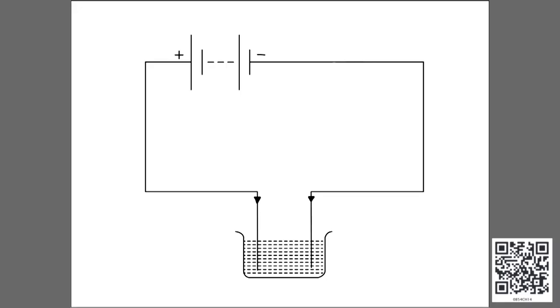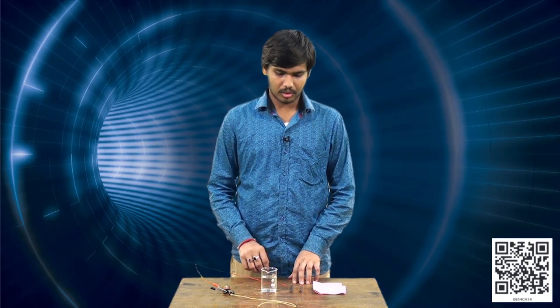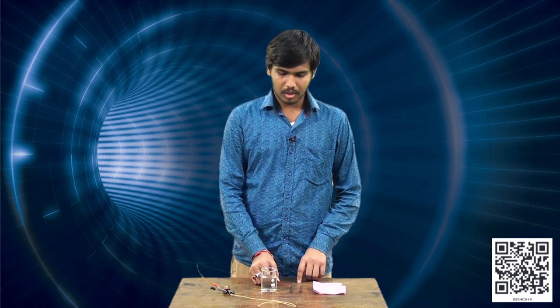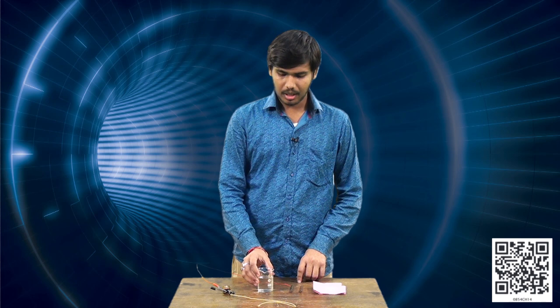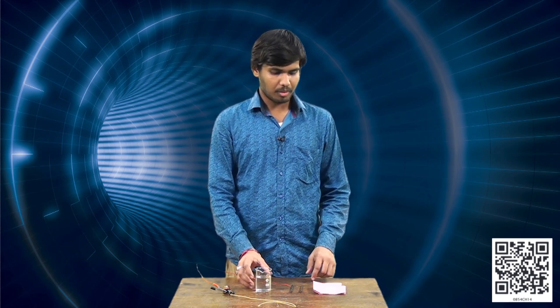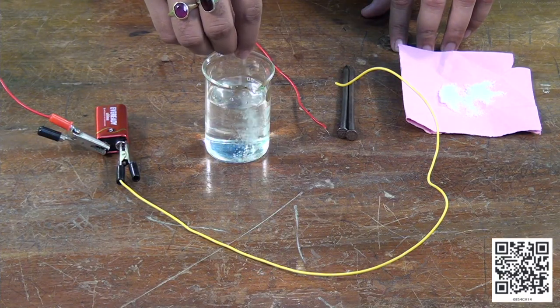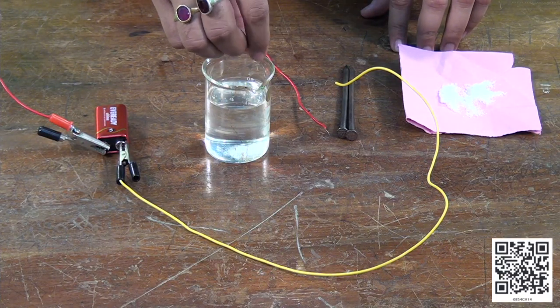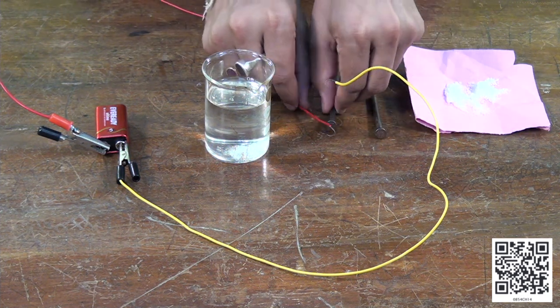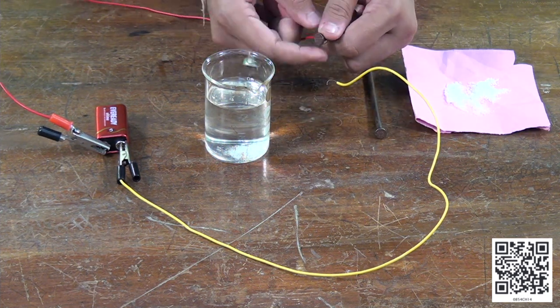Connections are made as shown in the diagram. So we will be taking two clean iron rods and the wires must be wrapped around it. After that we will take a beaker with distilled water or water, then we will be adding tablespoon of salt. While wrapping we must wrap it properly.